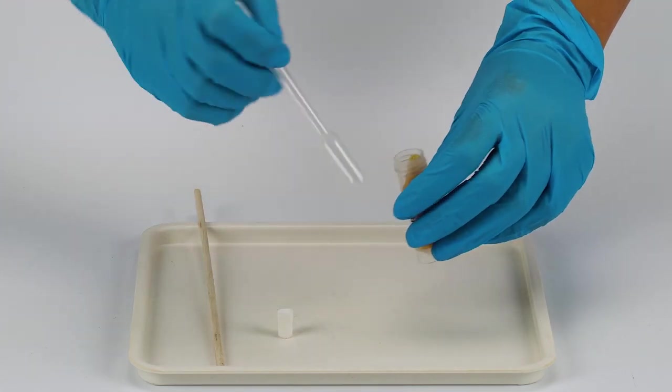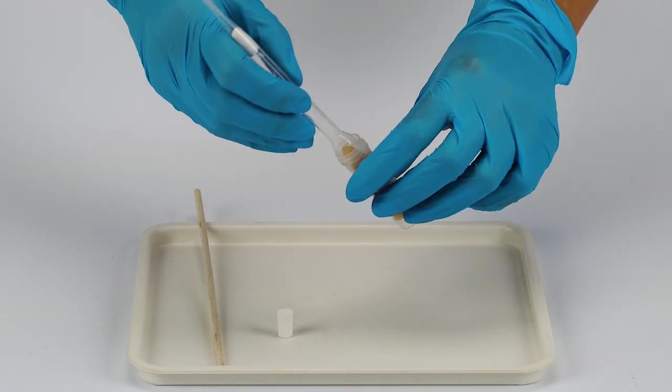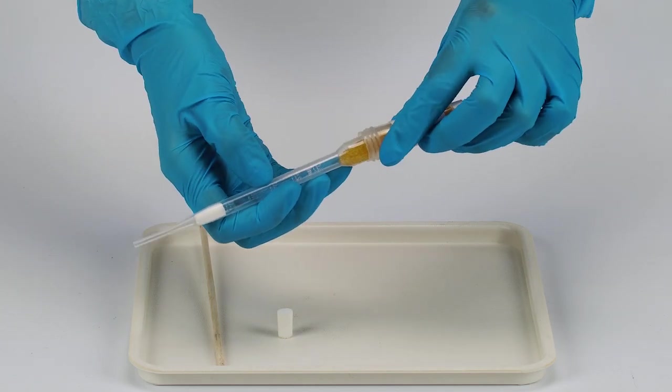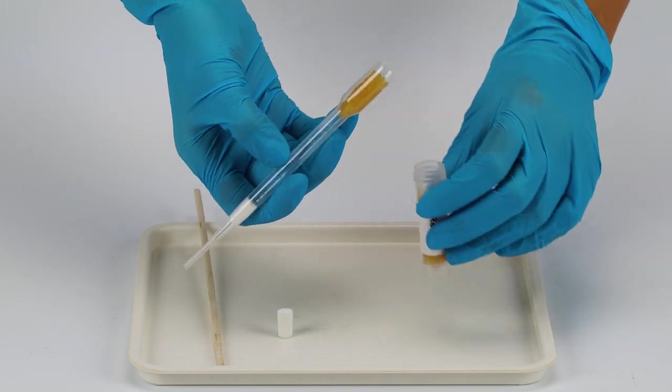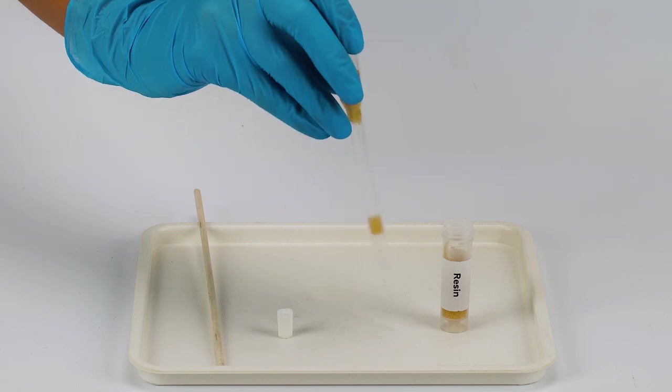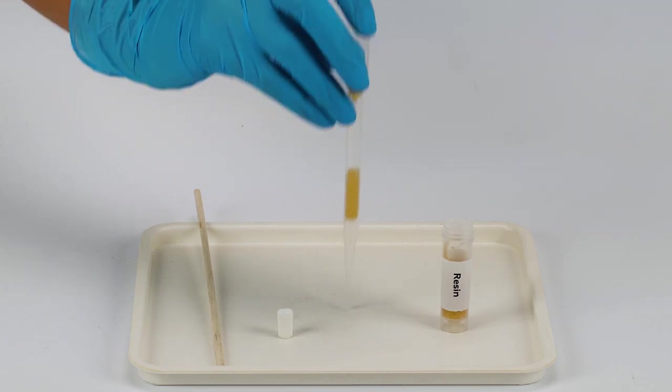Now, insert the wide end of the filter body into the vial of resin. When you take it out, the amount of resin you need should stay inside the filter body. Be sure to keep the filter body upright. To help the resin settle into the narrow part of the filter body, tap the filter lightly on the table or with your finger.